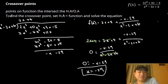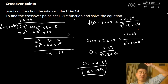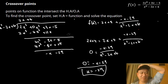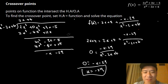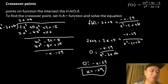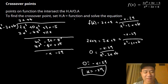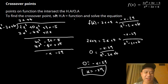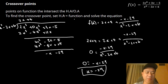To my knowledge this is the only one-size-fits-all way to get your crossover point for any scenario. There are other ways, but they're not universally applicable. You just find your HA or OA, set it equal to your function, solve the equation, and you get your crossover point.